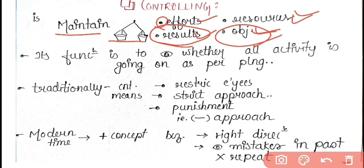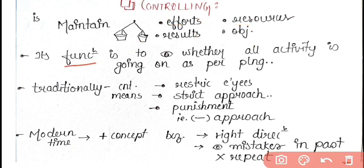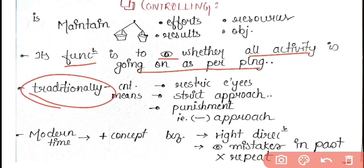What is the function of controlling? Its function is to see whether all activities are going on as per the planning. The main function of controlling is whether all things like organizing, staffing are happening according to the plan or not. Now, traditionally, in traditional terms, what did they do in controlling? They used to do complete restriction on employees.